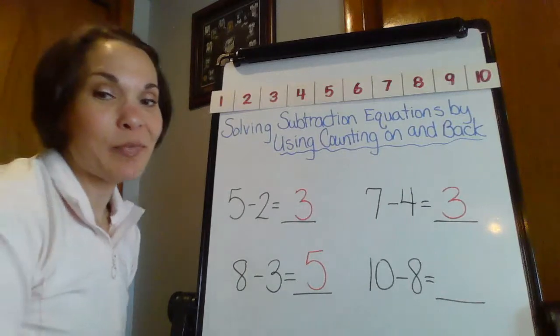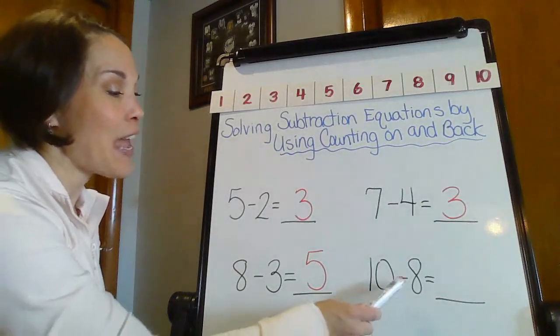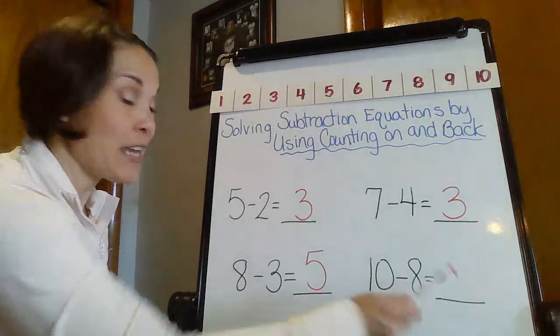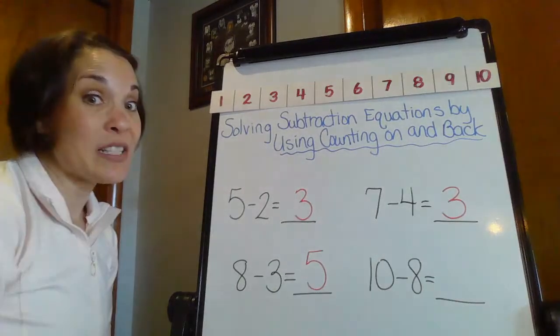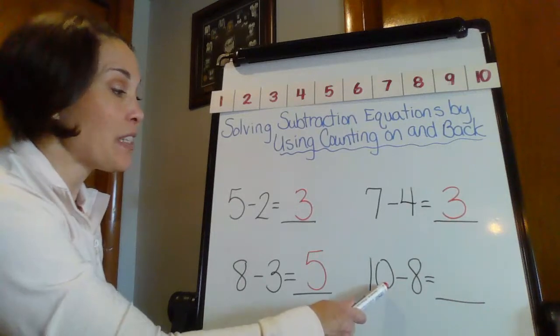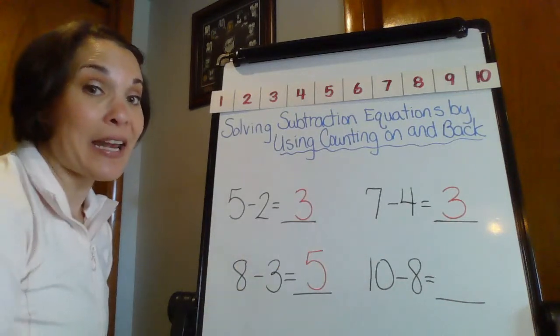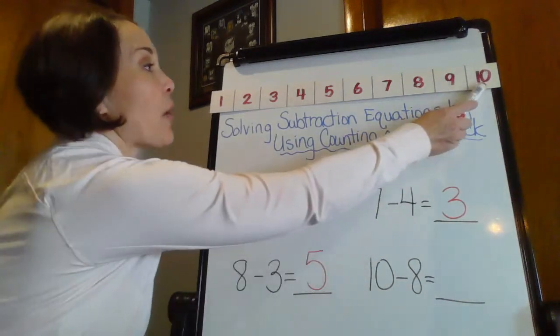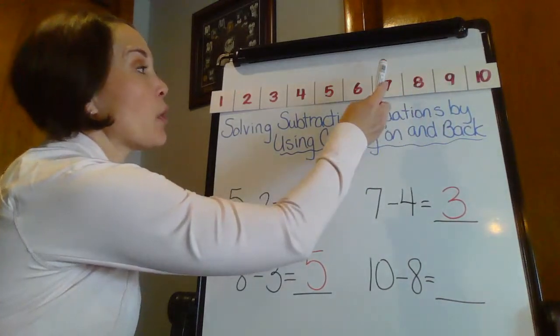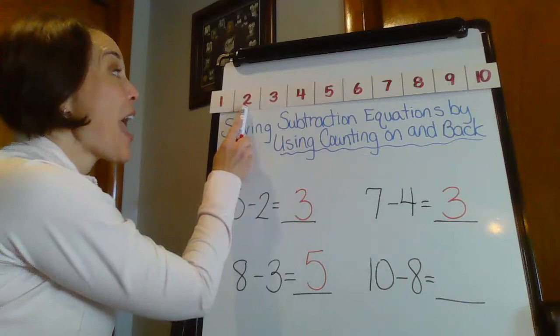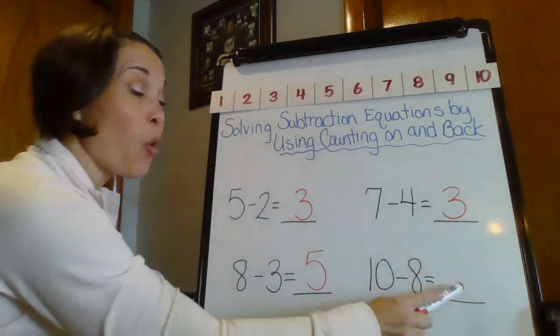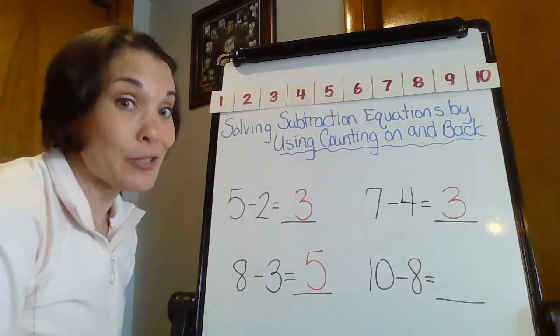All right. Let's do one more. So we have 10 minus eight. 10 take away eight equals. Here we go. It's our biggest whole number yet. So 10 and I want to hop back eight. I want to count back. So here I go. One, two, three, four, five, six, seven, eight. Eight. So hopefully my difference here is going to be two.